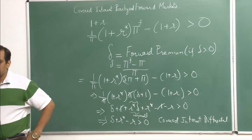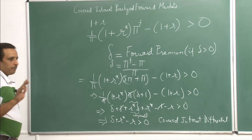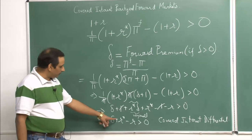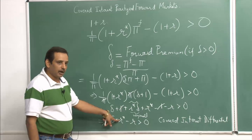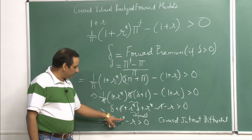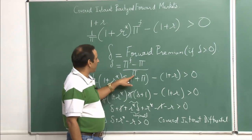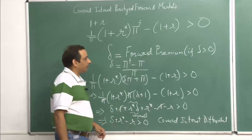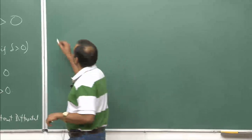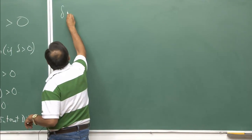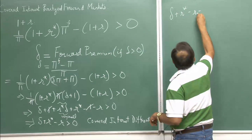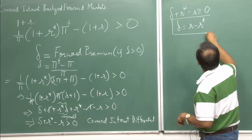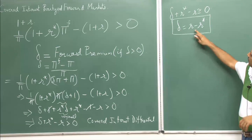In this case you do not even have to assume that investors are risk neutral. If you find a covered interest differential, there will be incentive to invest in foreign bonds. Eventually, money flows to foreign countries, so r* goes down, r increases, and δ — which is (π_f - π)/π — also adjusts. Eventually, even for a risk-averse person, δ + r* - r ≈ 0, so δ = r - r*. Your forward premium is determined by the differential interest rates.